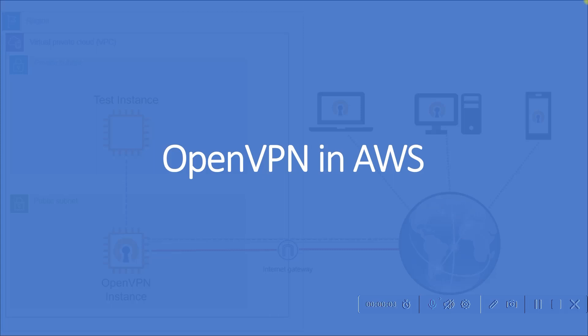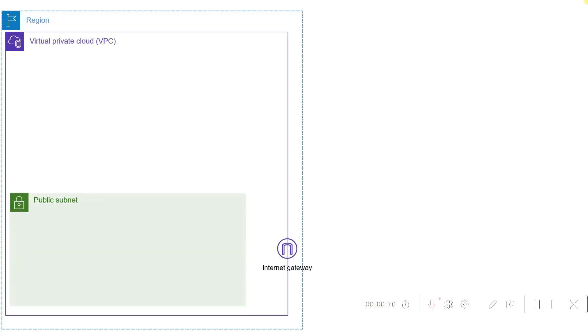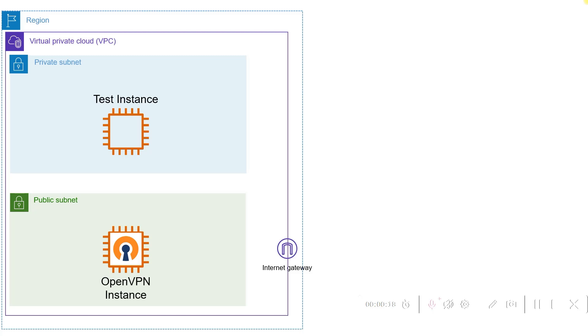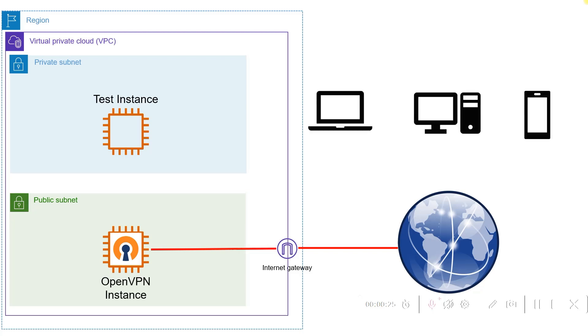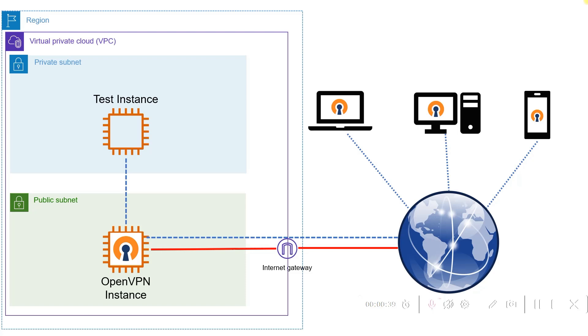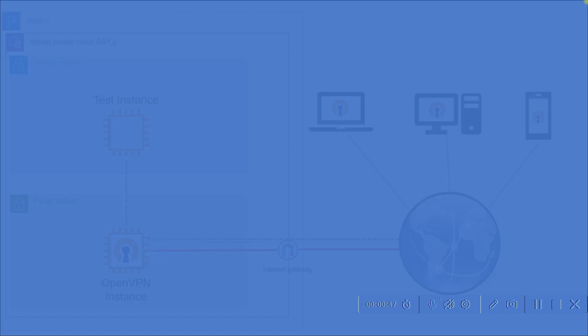We have completed this lab. In the US East 1 region, we created a VPC with an internet gateway, one public subnet with the OpenVPN instance, and one private subnet with the test instance. We were able to access the VPN server from the internet, downloaded the VPN client, connected to the server, and then accessed the test instance using the VPN connection. Hope you enjoyed the video — please subscribe and encourage me for more videos. Thank you so much for watching, bye bye.